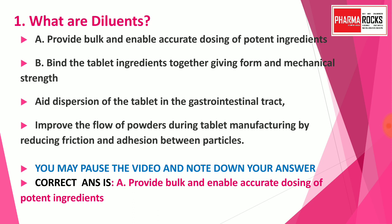The correct answer for this question is Option A: provides bulk and enables the accurate dosing of potent ingredients. Diluents are bulk-forming agents and they enable the accurate dosing of potent ingredients. They act as bulk-forming agents and also as fillers.